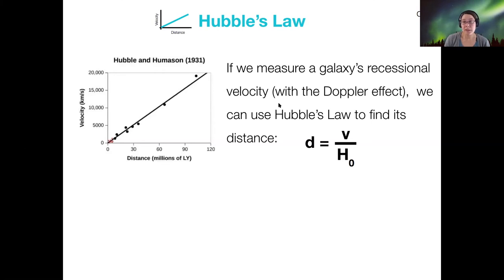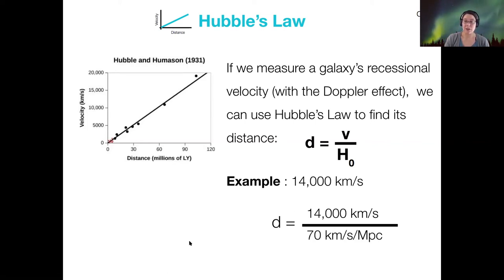Hubble's law is the last rung on our distance ladder because we can just rearrange the equation to solve for the distance of a galaxy. If I know that a galaxy is receding from us at 14,000 kilometers per second, then I can say its distance is that speed divided by Hubble's constant. If I just do the math, the kilometers per second will cancel out and I'll get the distance of 200 megaparsecs. This is really handy because it's pretty easy to measure the Doppler shift and measure the velocity of a galaxy that way. So then we can just use Hubble's law to calculate the distance.